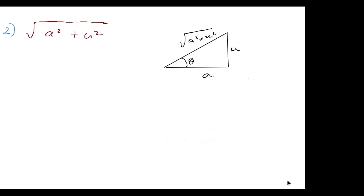The next pattern to look for is the square root of a² + u². Looking at the triangle set up for this case, the sides without the radical are the opposite and adjacent sides, and that's tangent. So tangent of theta is opposite over adjacent, meaning u = a tan θ is how this one works.